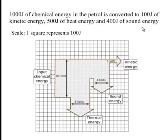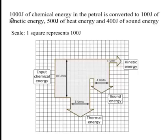To put that on a Sankey diagram, I need a scale. The scale I'm going to use on my grid is that one square will represent 100 joules. So if I start with the energy input, which is 1,000 joules, that means it has to be 10 squares wide. You can see here at this part of the diagram where I've got the input chemical energy, that bit is 10 squares wide.